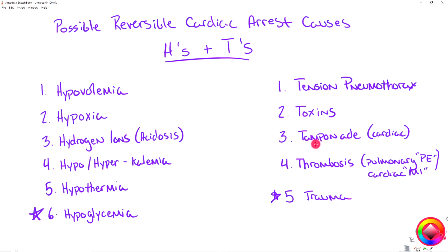Next is tamponade — specifically cardiac tamponade. This is where you have an increase in fluid buildup around the heart within the pericardial sac. It fills up and literally squishes the heart, so the heart can't fill properly. It decreases preload and decreases perfusion status because not enough blood is getting out of the heart per pump.